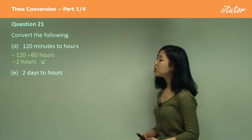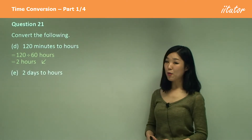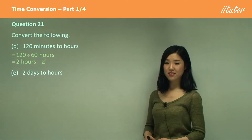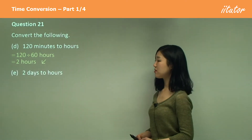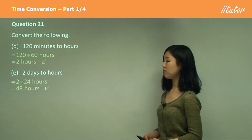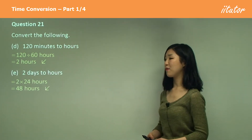E: two days to hours. There's 24 hours in a day. So we simply multiply by 24, which is 48 hours.